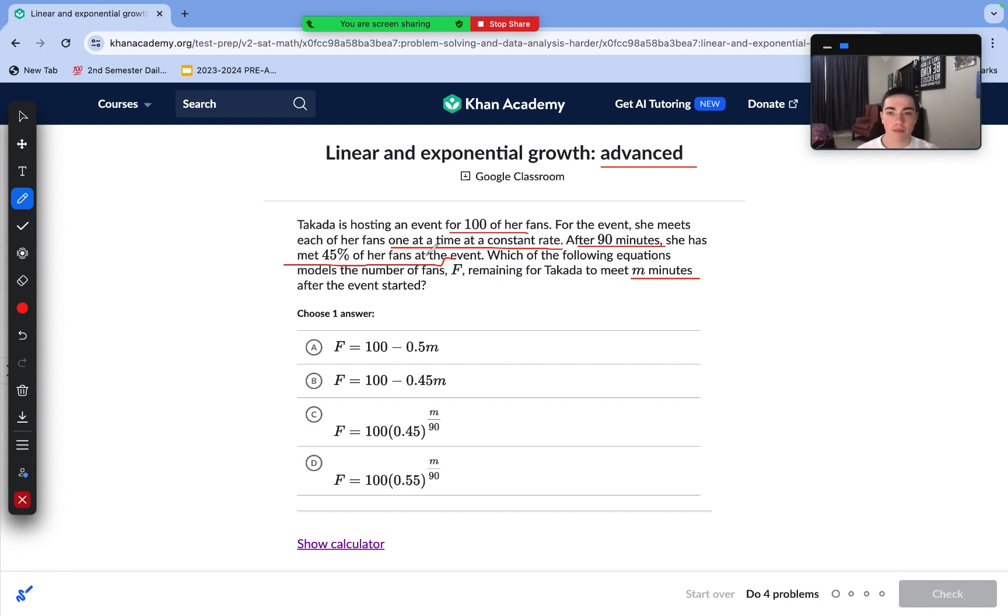The key term here is that she's meeting the fans at a constant rate. From our previous videos, we might notice that constant rate means a slope, so that we only have a linear equation here, not an exponential function. That would be if we had a common ratio or a common factor. It's being multiplied by something here. It's just something that's adding or subtracting multiple times.